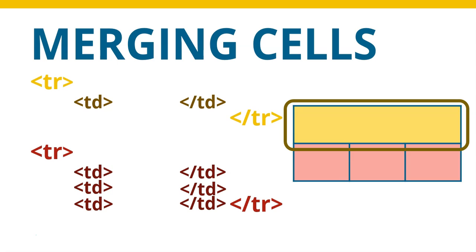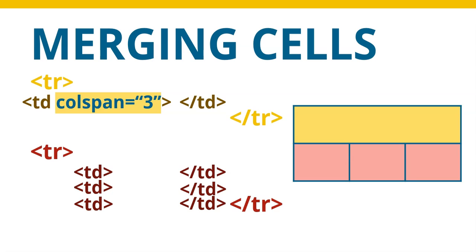Inside the TD for this block, I need to say that it's colspan — it's spanning over multiple columns. Colspan equals three. In other words, stretch this block over three columns that might be below it. That's how you would write the code for that particular scenario. And there you can get a nice merged cell that stretches over three blocks.